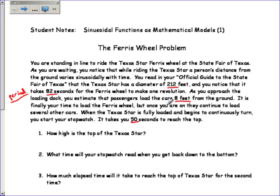How high is the top of the Texas Star? Well, the diameter is 212 feet, but it does not start on the ground. It starts 8 feet off the ground. So the Texas Star is 220 feet up off the ground. This is going to be our crest or our peak. If you're a cosine person, this is a very important number for you.